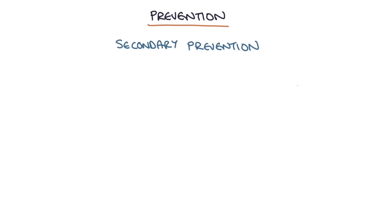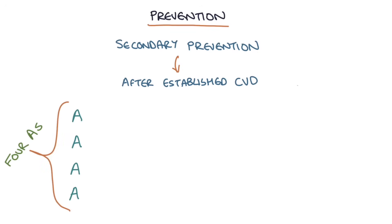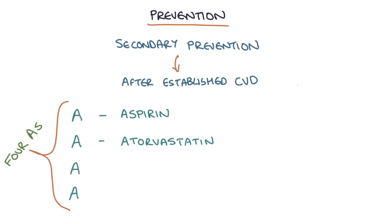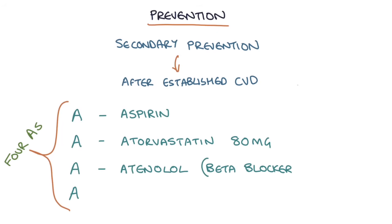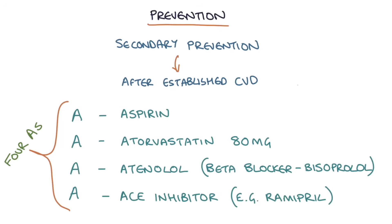For secondary prevention — after a patient has already had a heart attack, angina, TIA, or stroke — remember the four A's. The first A is aspirin. The second is atorvastatin — after cardiovascular disease, we aim for 80mg compared to 20mg in primary prevention. The third A is atenolol or any beta blocker, usually bisoprolol, titrated to the maximum tolerated dose. The fourth A is an ACE inhibitor, such as ramipril, again titrated to the maximum tolerated dose based on blood pressure and symptoms.